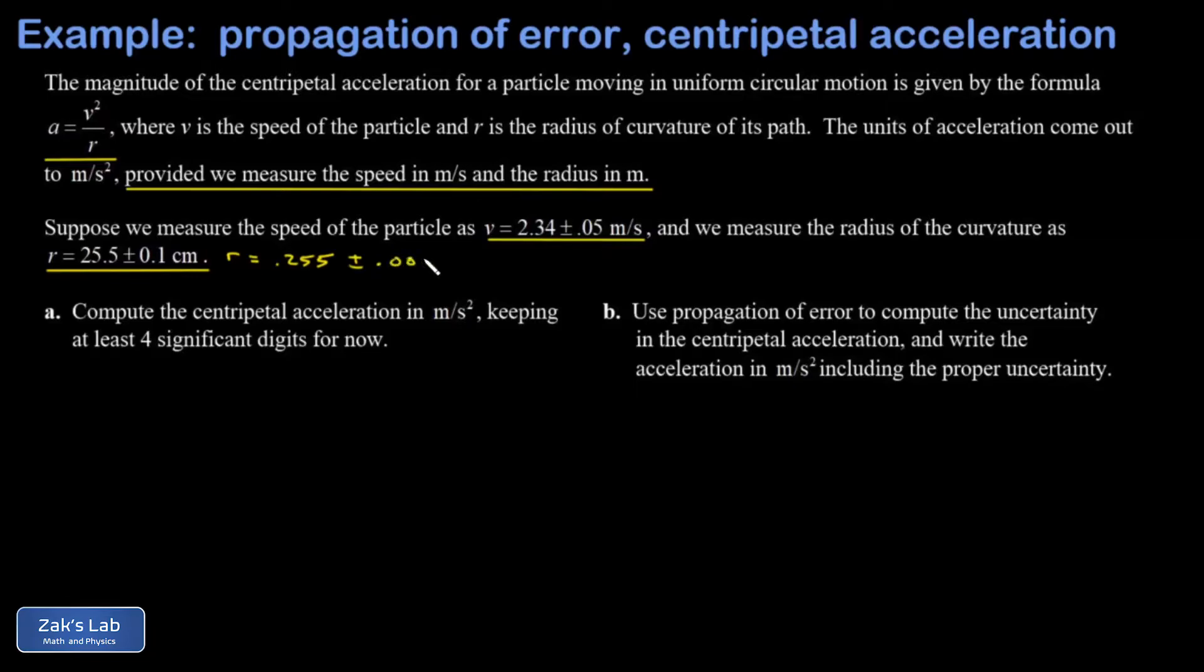The question is really about how to compute the uncertainty in the centripetal acceleration properly using propagation of error formulas. It's broken into two parts. We start with finding the acceleration in meters per second squared, keeping extra precision for now.